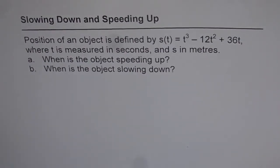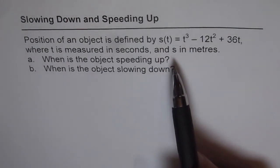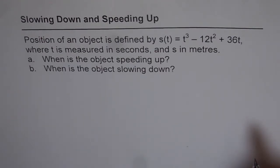Here is an application of derivatives where we are linking position, velocity, and acceleration. We will try to understand when an object is slowing down or speeding up. The position of an object is defined by s(t) = t³ - 12t² + 36t, where t is measured in seconds and s in meters. When is the object speeding up and when is the object slowing down?